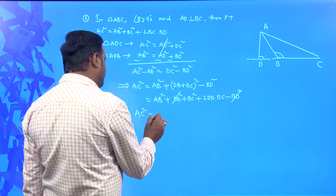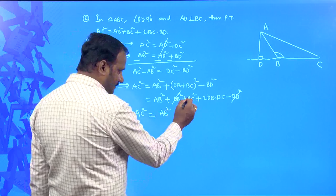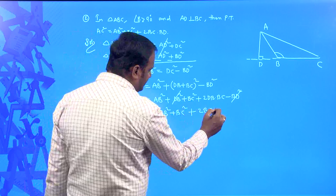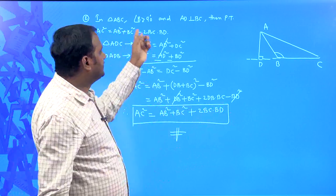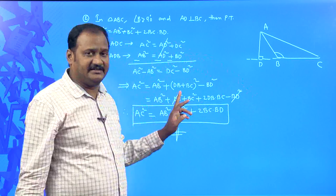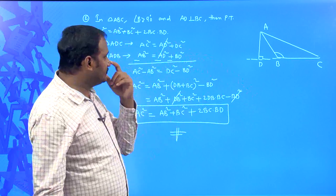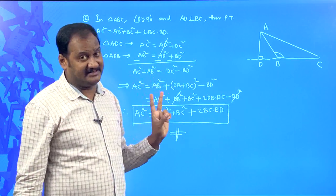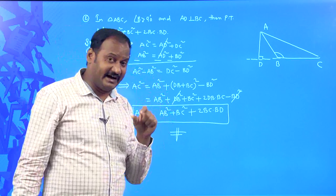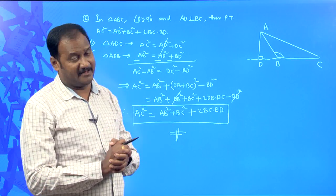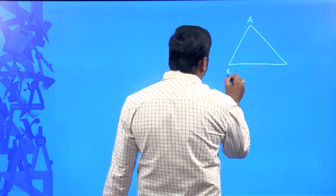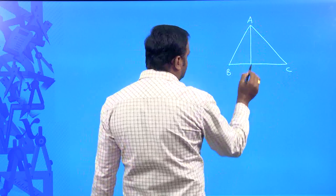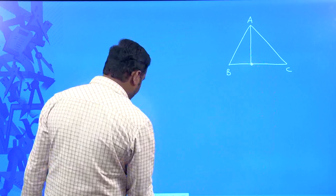The BD² terms cancel, and finally AC² = AB² + BC² + 2BC·BD. This completes the proof when angle B > 90°. We have now proved both theorems. When you combine these two statements, another theorem is derived called the Apollonius theorem, which I am going to introduce now.